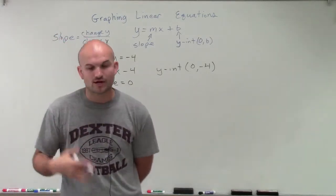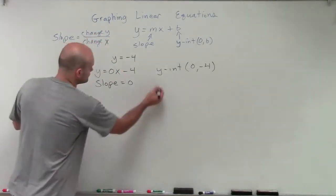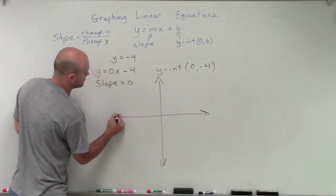Now, what we've talked about, when our slope equals 0, we know that we're going to have a horizontal line. So let's go and take a look at our graph, because we do have a y-intercept that we can plot.